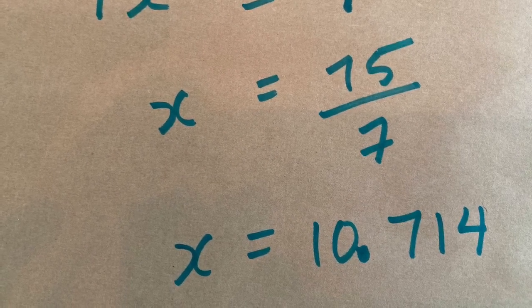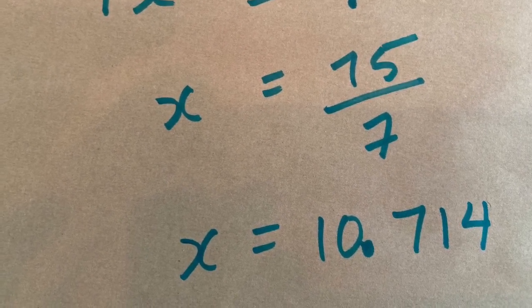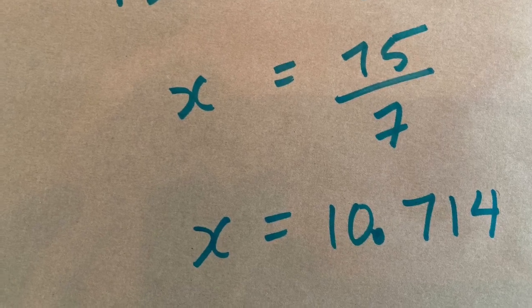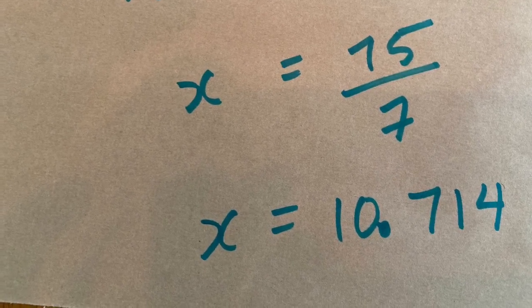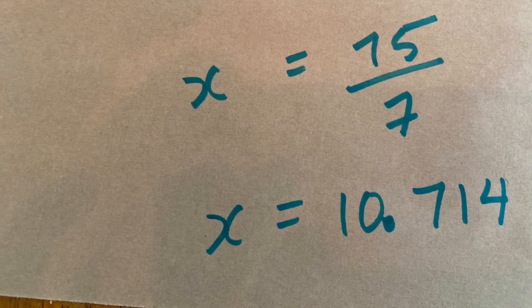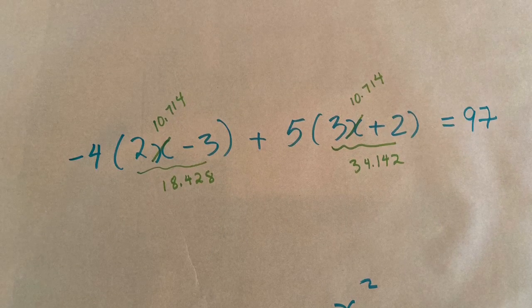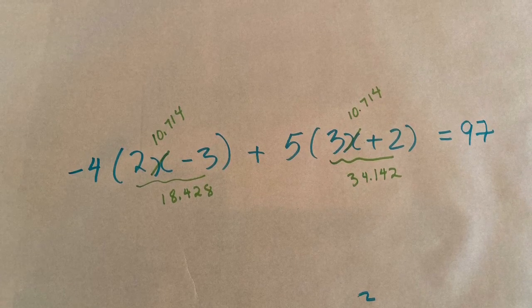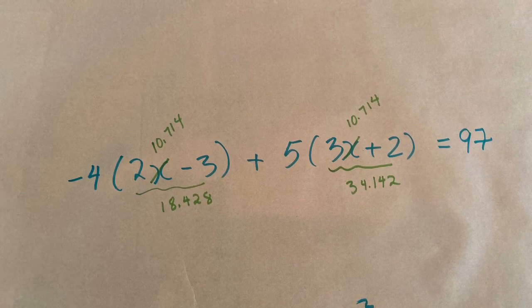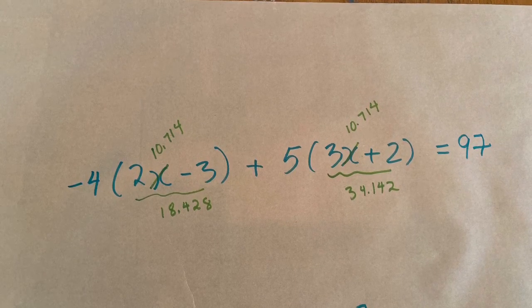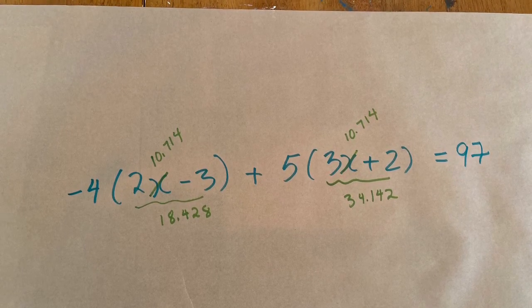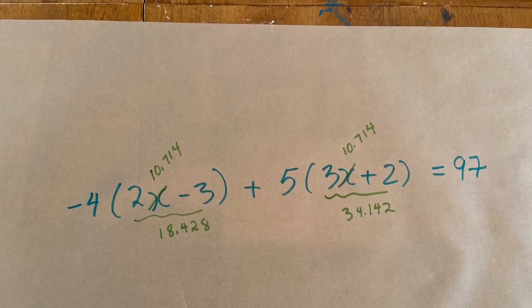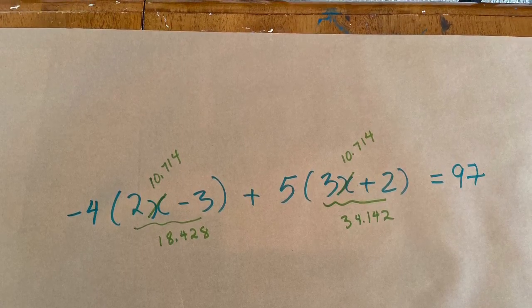The math teacher in me took over. I couldn't go on in my video until I checked to make sure my decimal answer was correct. So I took 75 divided by 7 and got 10.714. I wrote down the original equation and put x equals 10.714 into that equation. I got 2 times 10.714 minus 3 equals 18.428, and 3 times 10.714 plus 2 equals 34.142. When I multiplied negative 4 times 18.428 plus 5 times 34.142, I got 96.669, which is basically 97. So we did not make a mistake.